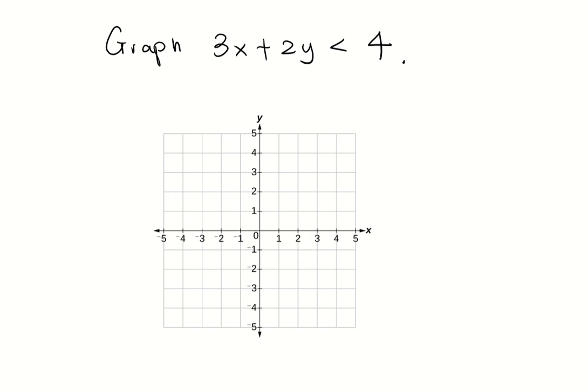First, we will leave y by itself. So let me write down the inequality over here again. To leave y by itself, let's move everything to the other side. So you have 2y is less than -3x + 4. Now divide both sides by 2.